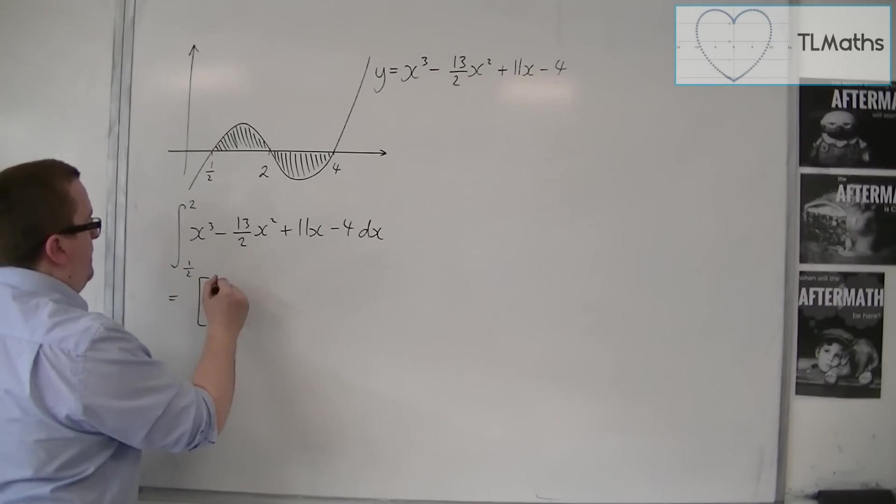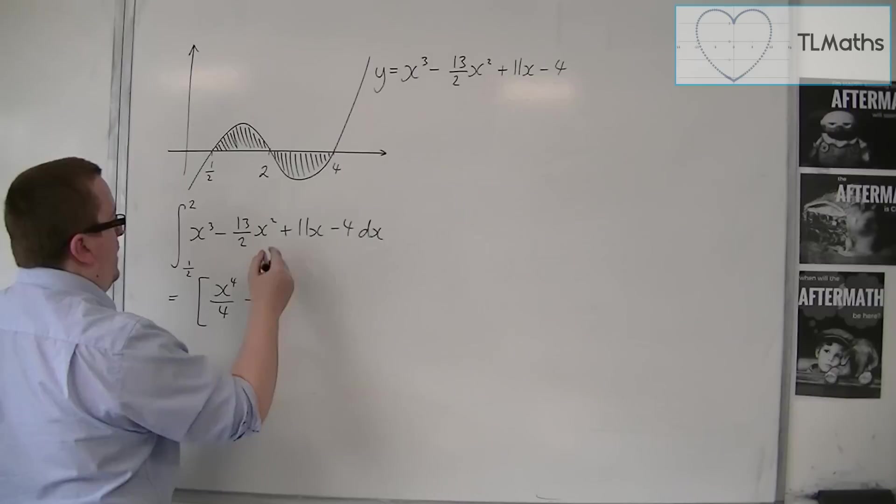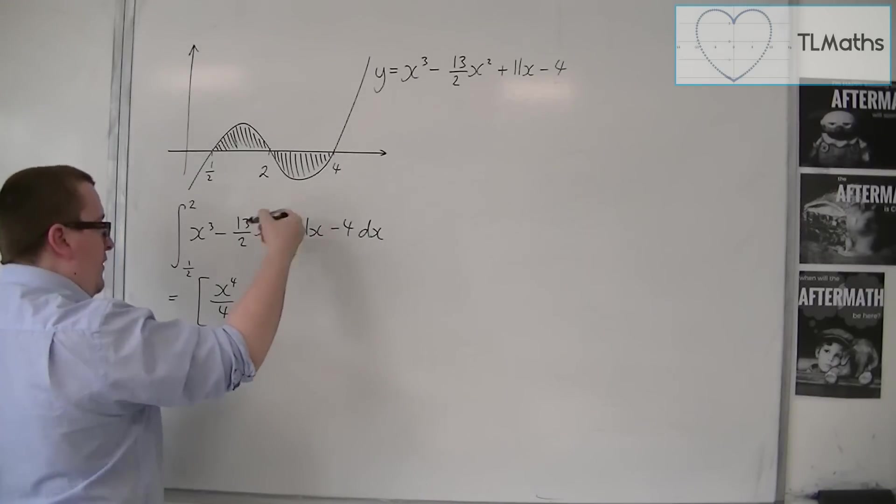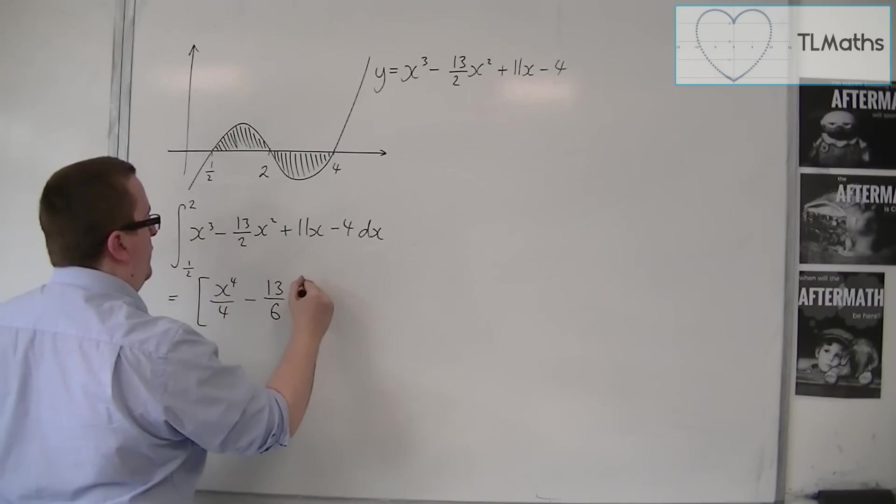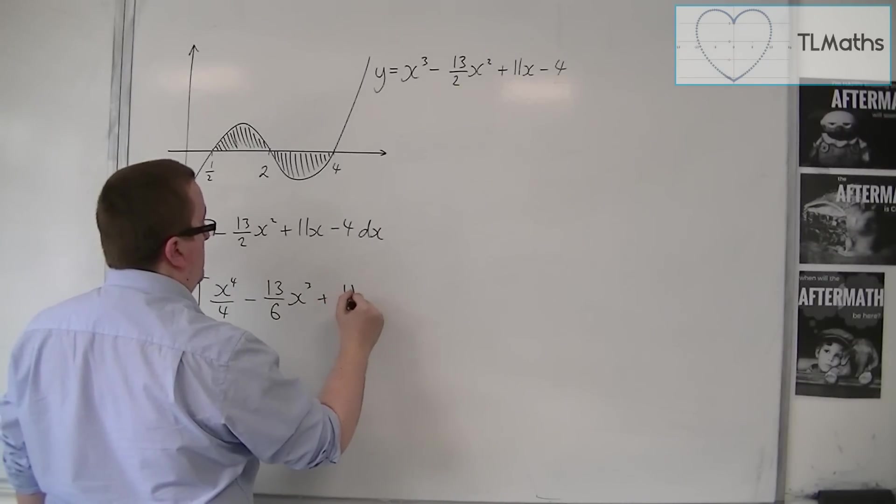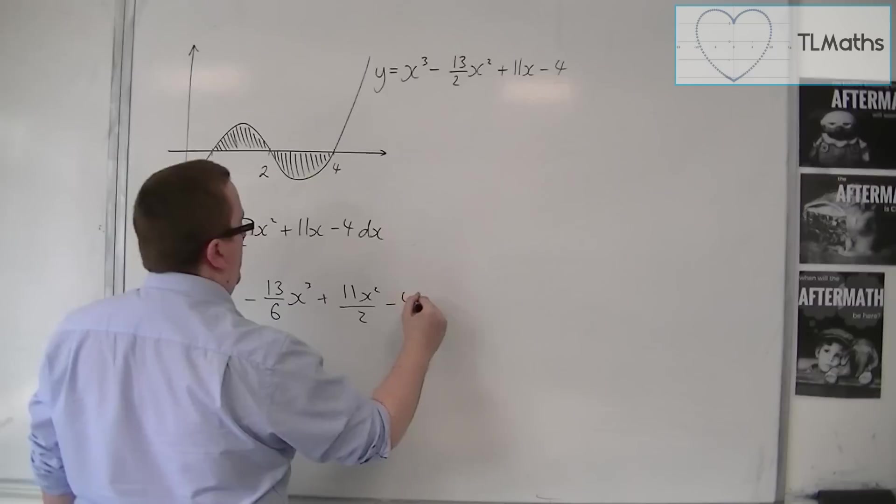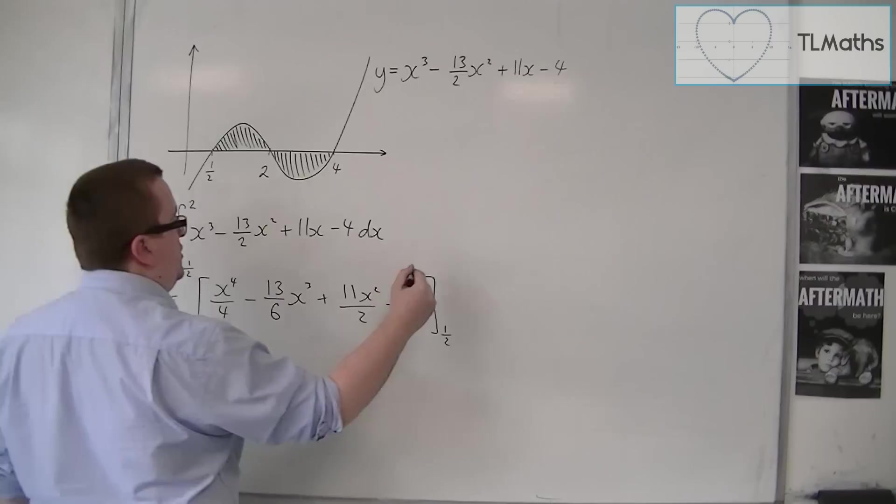So integrating, add 1 to the power, divide by the new power. I'm going to get x⁴/4 - 13/6 x³ + 11x²/2 - 4x, and I'm going to evaluate that between 1/2 and 2.